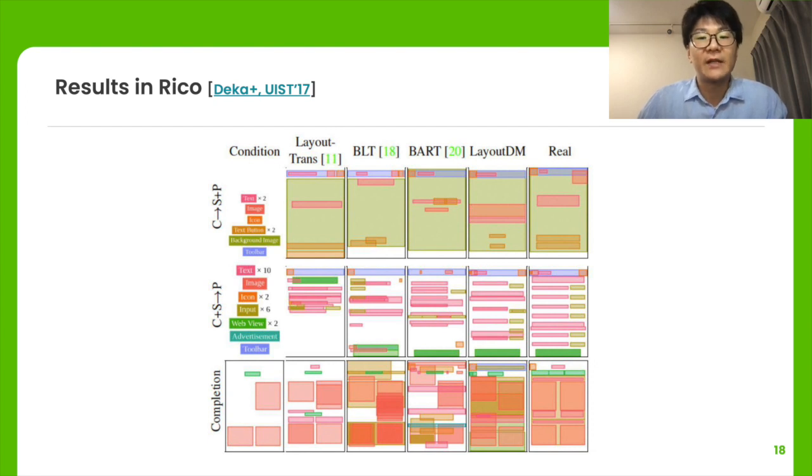We demonstrate the validity of LayoutDM on two datasets. Here we show some results when the condition is hard on RICO. RICO is a dataset of user interface designs for mobile applications containing 25 element categories, such as text button, toolbar, and icon. We can see that LayoutDM generates high-quality layouts with few layout aesthetic violations, such as misalignment and overlap, compared to other methods like LayoutTransformer.